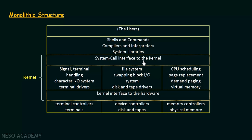Below this is the system call interface to the kernel — that is the system call which acts as an interface to the kernel. Everything below this system call interface to the kernel and above the hardware is known as the kernel. In the kernel, it has all these functionalities: signal, terminal handling, character input-output system, terminal drivers, file systems, swapping, block input-output systems, disk and tape drivers, CPU scheduling, page replacement, demand paging, virtual memory, and so on. Everything is packed into one level, and hence we call it a monolithic structure.